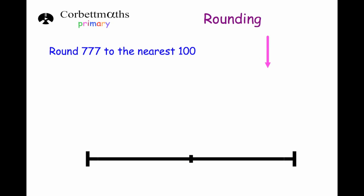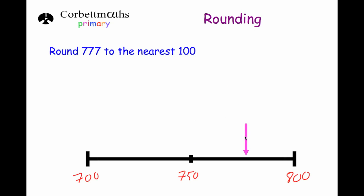Our next question asks us to round 777 to the nearest hundred. The multiple of 100 below 777 is 700, and above 777 is 800, with 750 in the middle. Since 777 is above halfway, it's around about here on the number line — closer to 800 than to 700. So rounding 777 to the nearest hundred, our answer is 800.